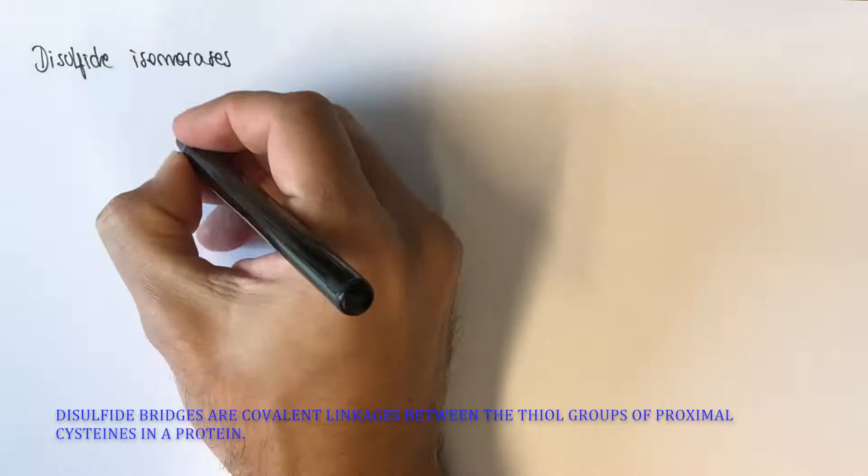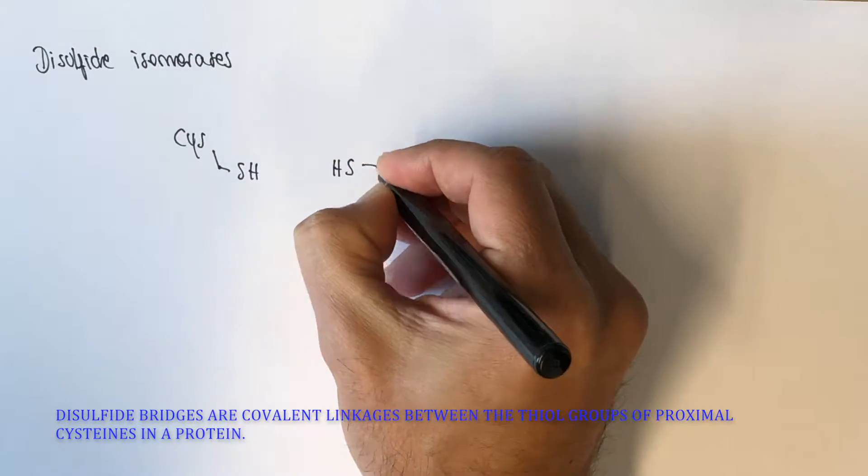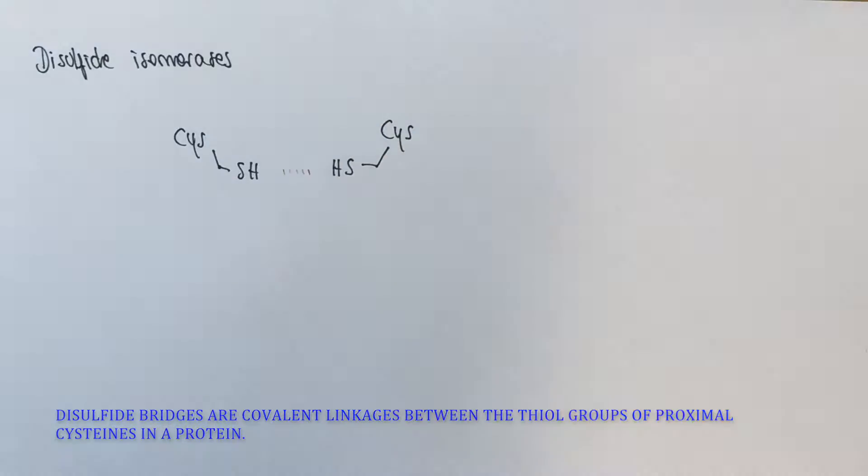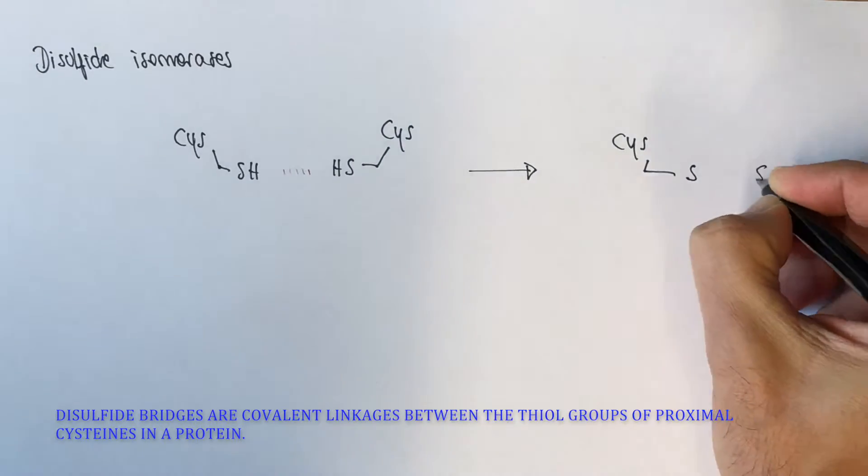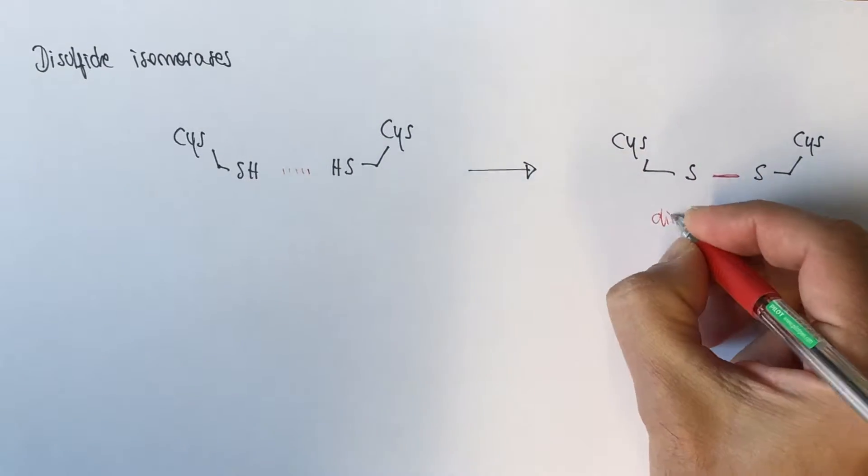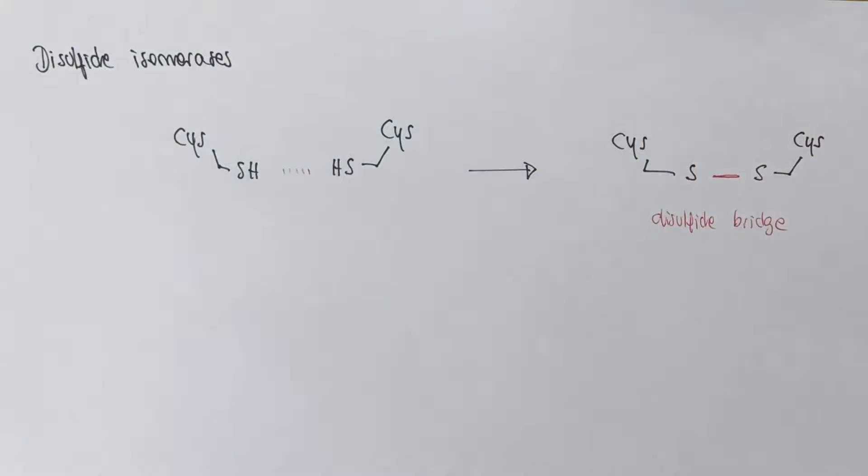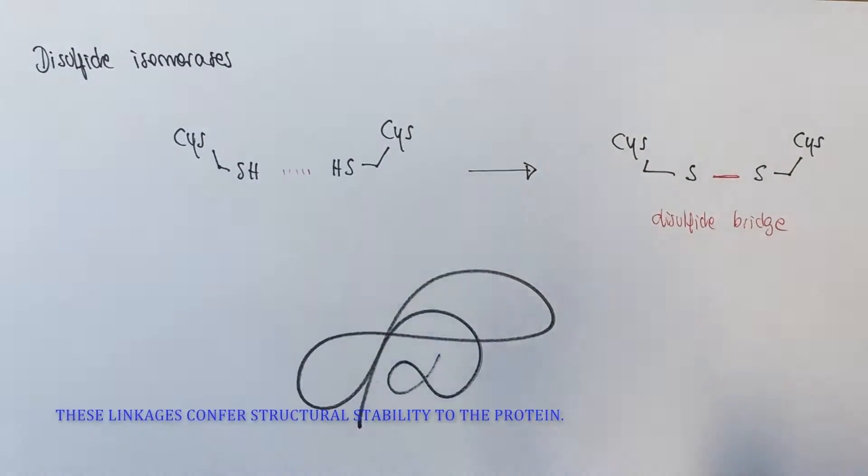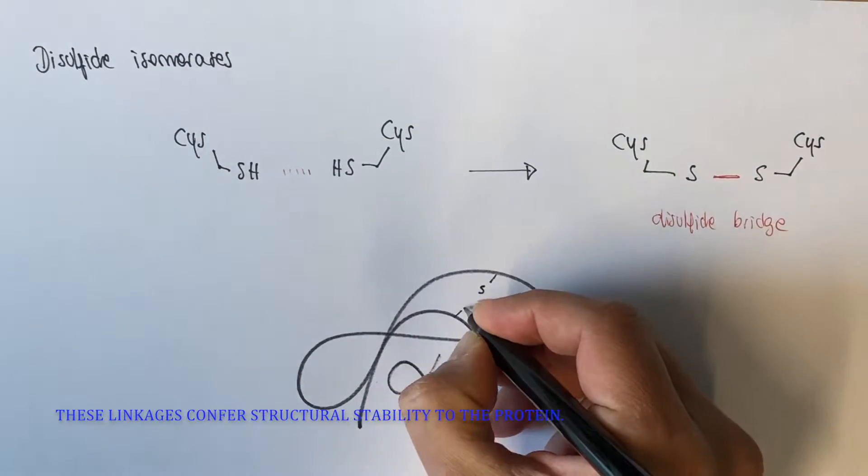Disulfide bridges are covalent linkages between the thiol groups of proximal cysteine residues in a protein. These linkages confer structural stability to the protein.